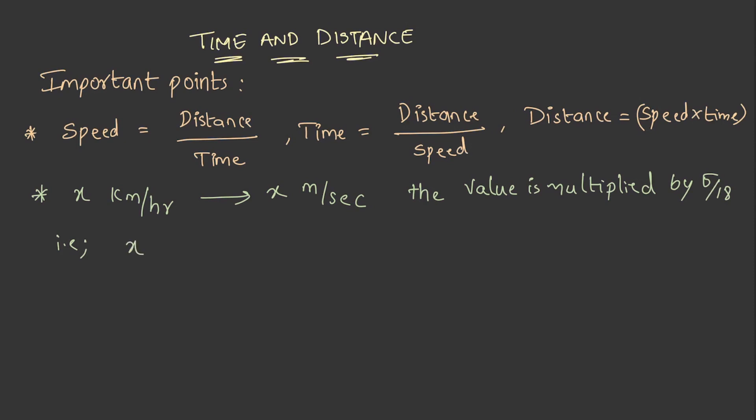That is x into 5 by 18 meters per second, and vice versa. That is if it should be converted from x meters per second to x kilometers per hour, then it is x into 18 by 5 kilometers per hour.